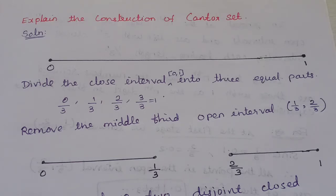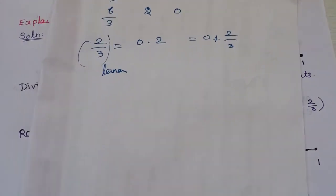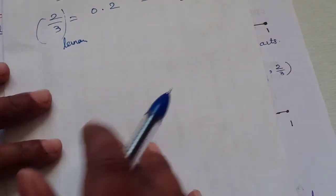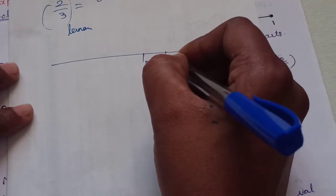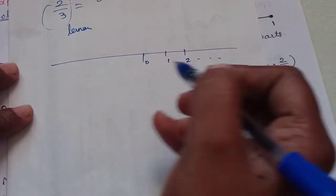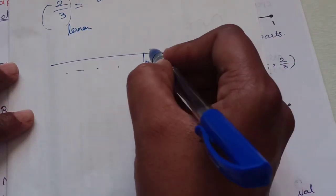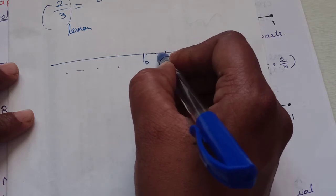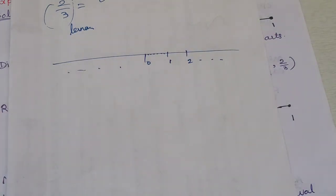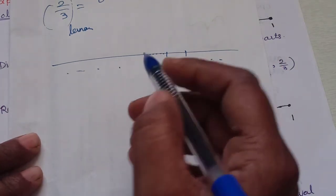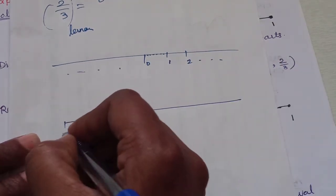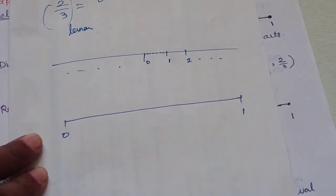Explain the construction of the Cantor Set. This is a university 5-mark question. The real number system goes 0, 1, 2, 3, with positive and negative values. We will use a closed interval and work with that to construct the Cantor Set.